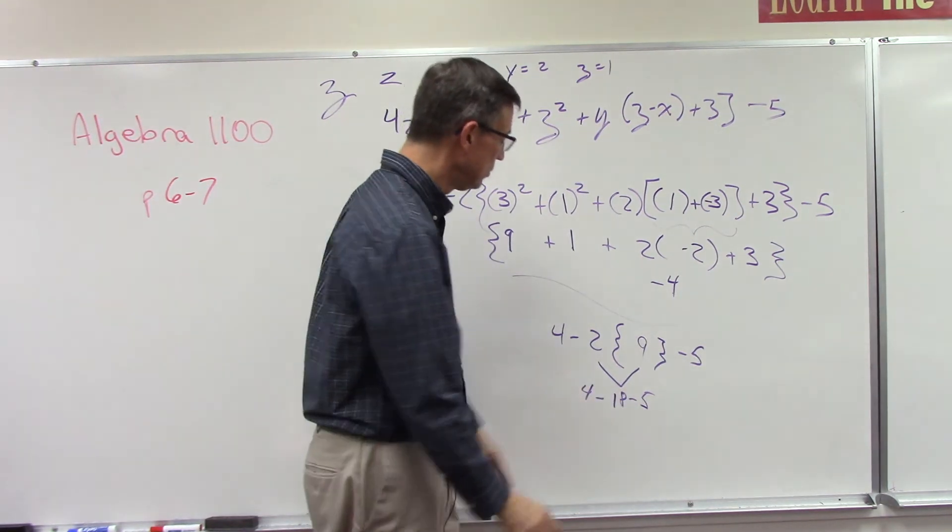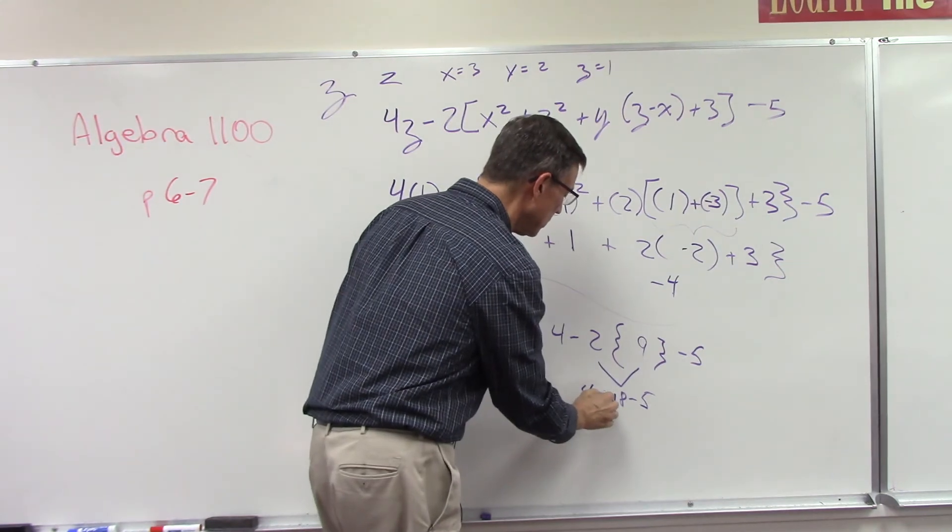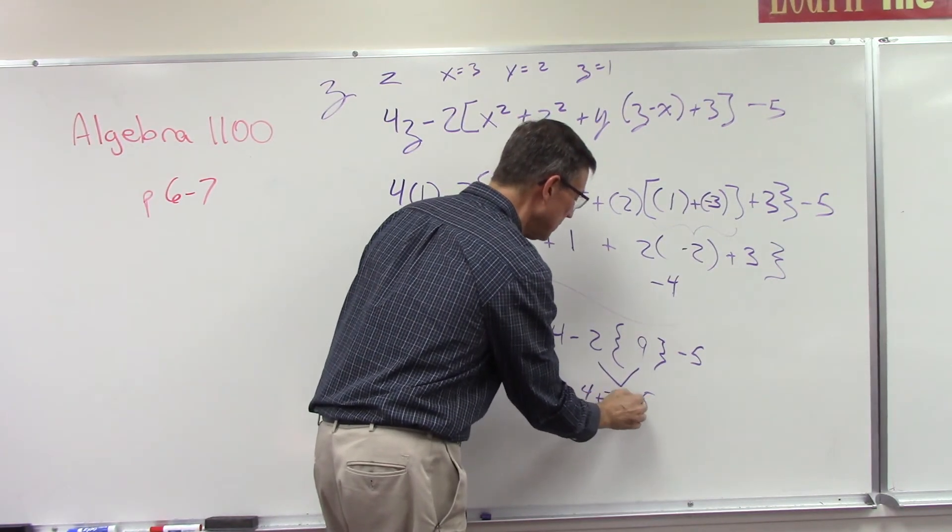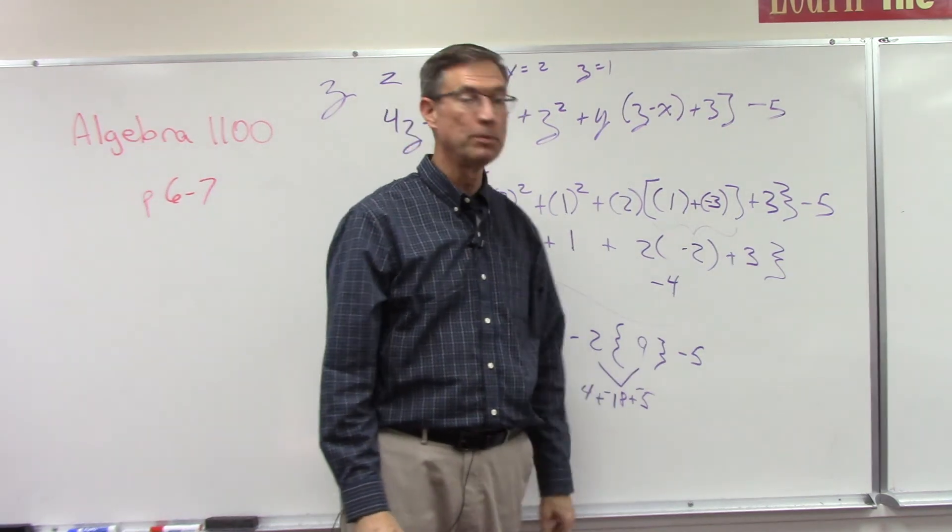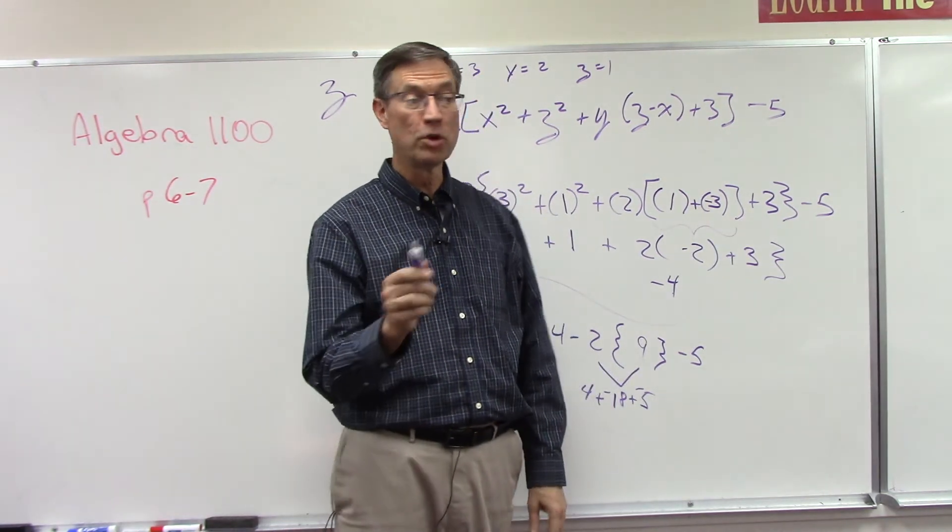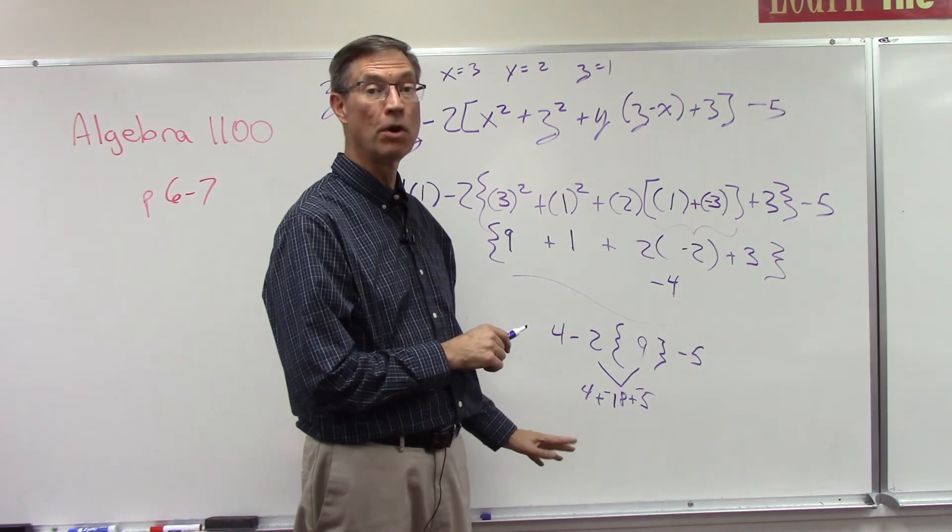So again, change subtraction to adding, change the second number to its opposite. Now subtract the smaller from the larger, keep the sign of the larger, do the same for the last step and you're done. Okay, I'm not going to finish that one for you, but now that we helped you get the hard one all set up and we walked through all of the steps and explained the things.